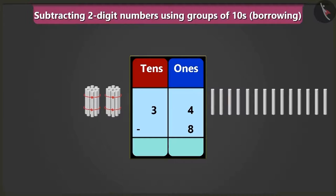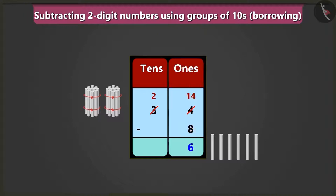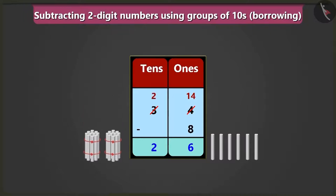That means the number in the place of ones can borrow one ten from its neighbor. Yes, absolutely right, Bubbly. Now we will write one ten and four ones — fourteen — in the box of ones, and we will write two tens instead of three tens in the box of tens. Now if we subtract eight from fourteen in the place of ones, then it will be one, two, three, four, five and six left. So we will write six in the place of ones. Now we will have two tens in the place of tens, so the answer will be twenty-six.